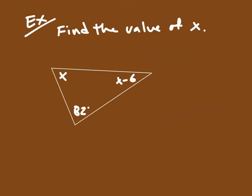Let's look at an example. We're being asked to find the value of x. We're given a triangle with all three angle measures: x, x minus 6, and 82. We can set up an equation knowing that all these angles add up to 180 and write: x plus x minus 6 plus 82 is equal to 180 degrees.